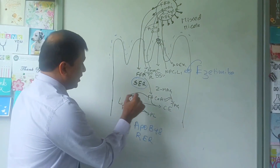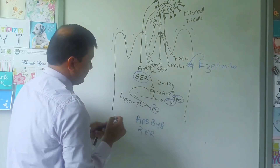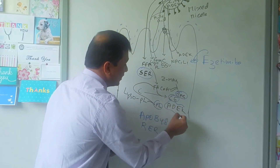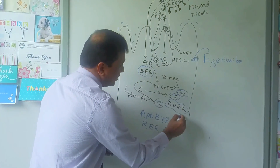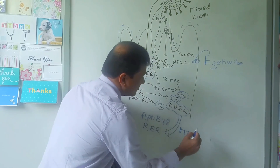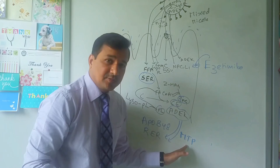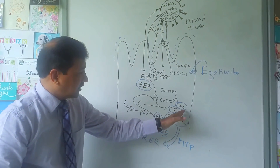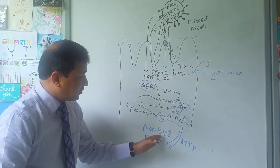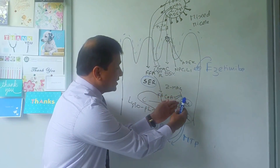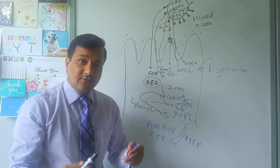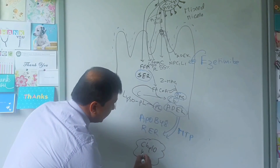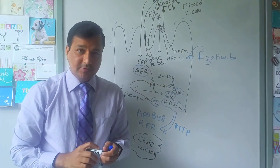ApoB48 is in the rough endoplasmic reticulum while the lipids are in the smooth ER. A special protein called MTP — microsomal transfer protein — acts as a connector between the smooth ER and the rough ER. MTP transfers lipids from the smooth ER to be loaded onto apolipoprotein B48 in the rough ER, and at the end of this loading process you get a molecule called chylomicrons.